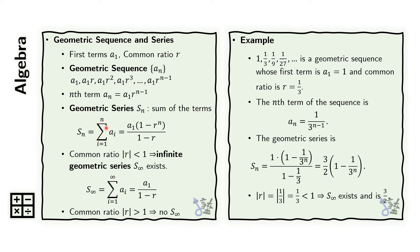We denote it using this summation notation. If r, or the common ratio, has an absolute value less than 1, then we can take n to approach infinity and obtain a value for the infinite geometric series, which can be computed using this formula.